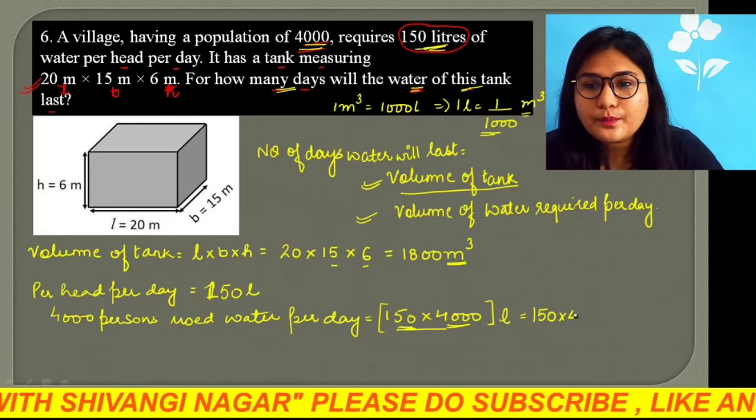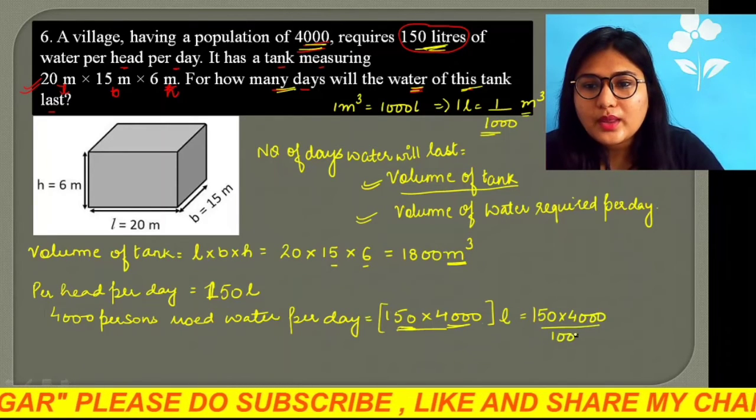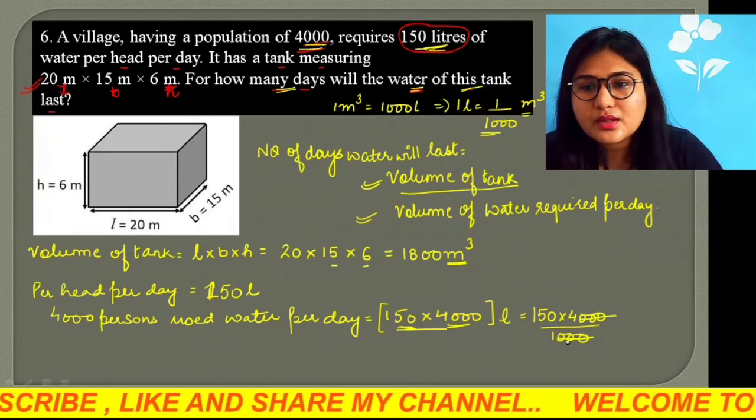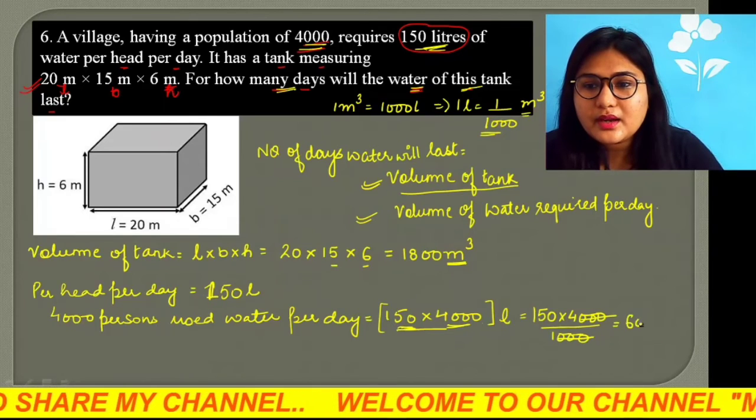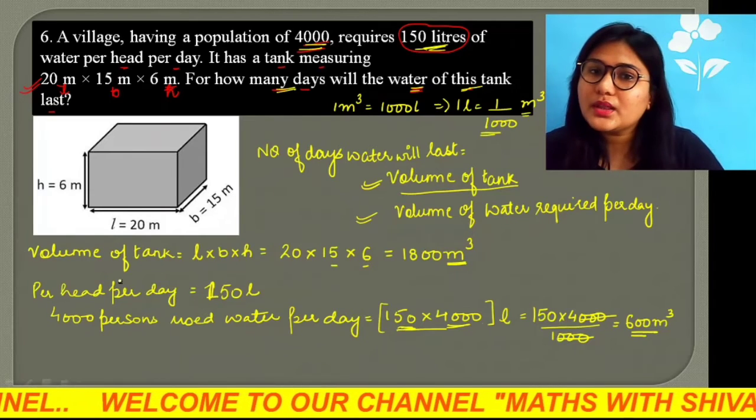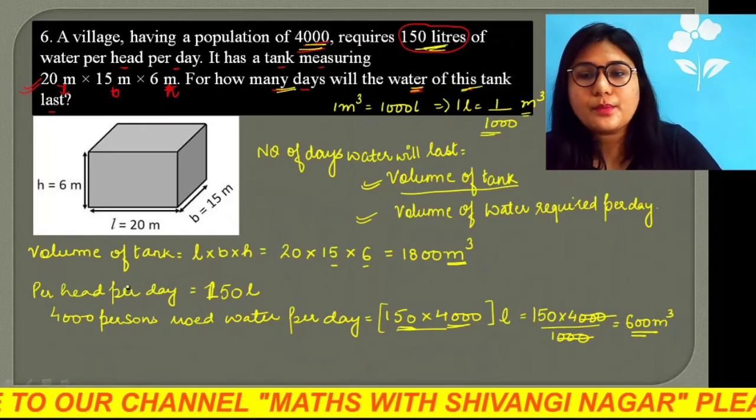So, 150 into 4000 divided by 1000. So, what we will be getting here? We will be getting here 600 meter cube.